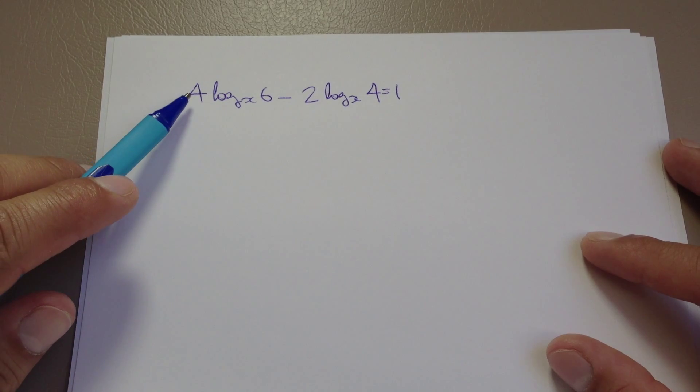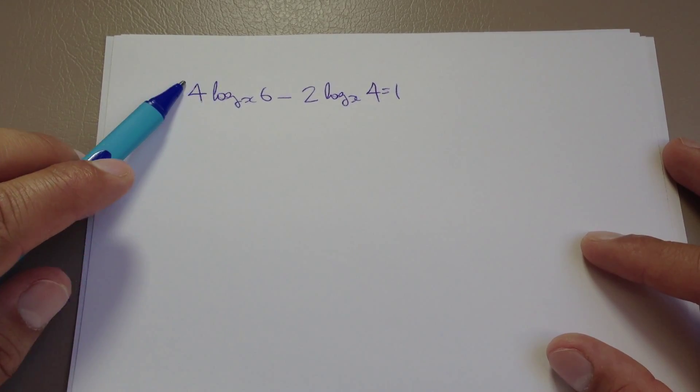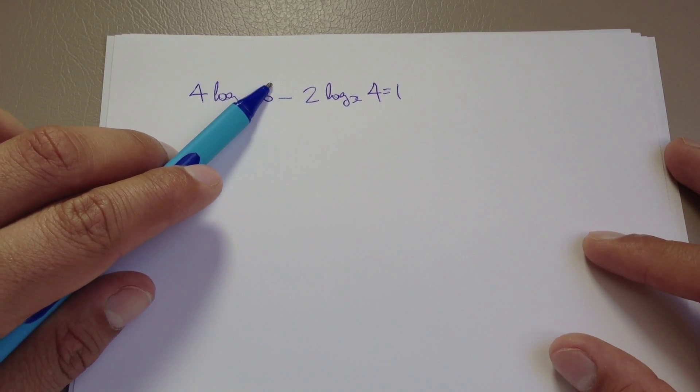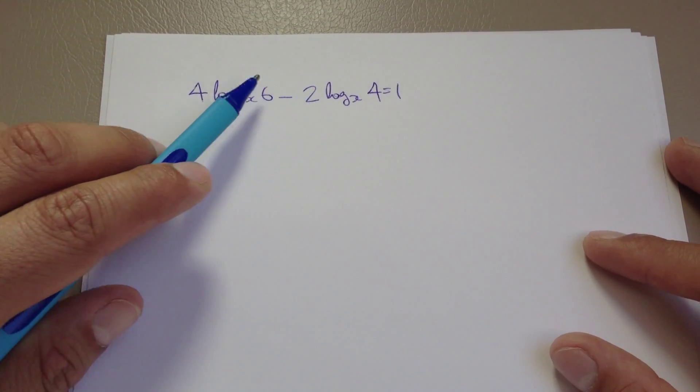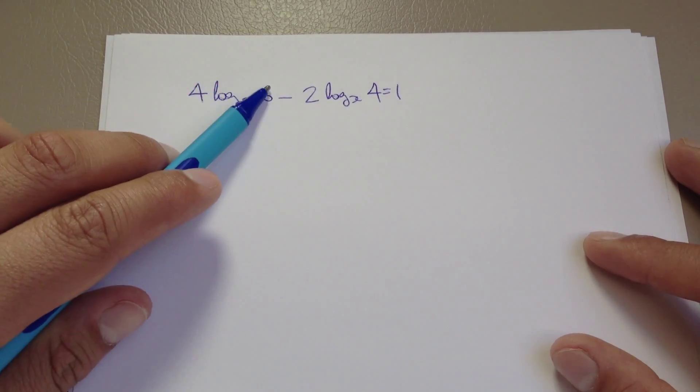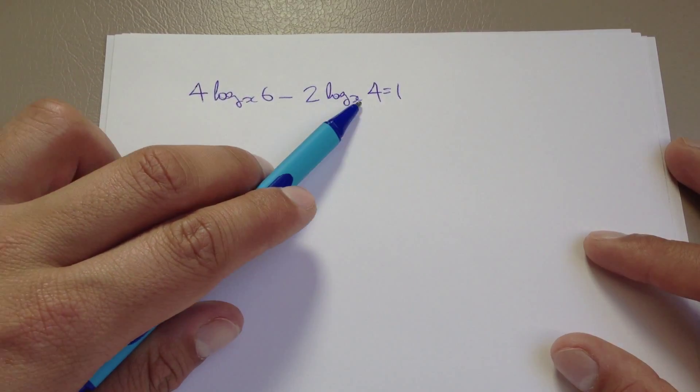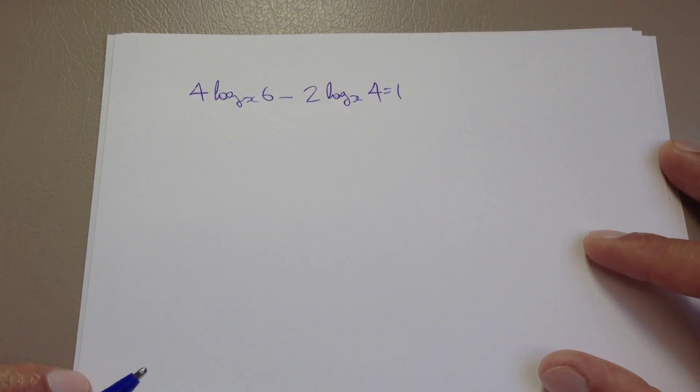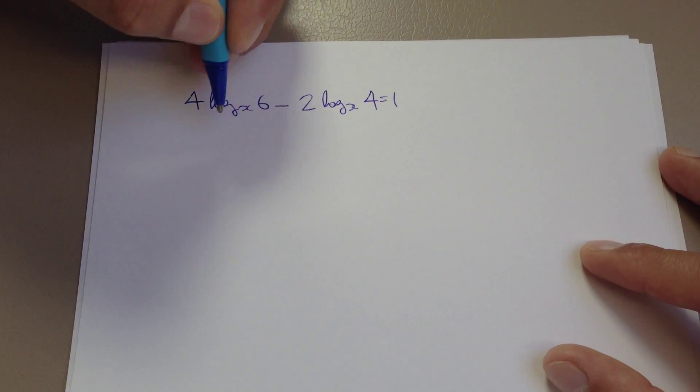What I'm going to do is take the coefficient and write it as an exponent or power. So that would become log to the base x of 6 to the power of 4, and likewise this would be log to the base x of 4 squared. That's a rule of logarithms, so let's go ahead and do that.